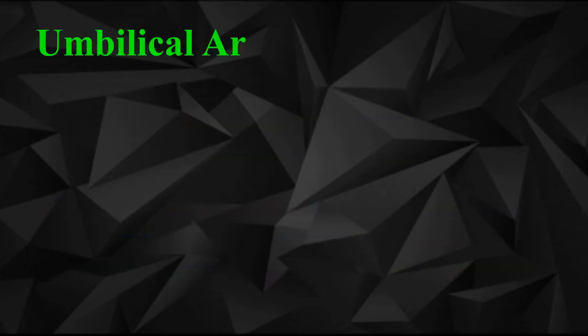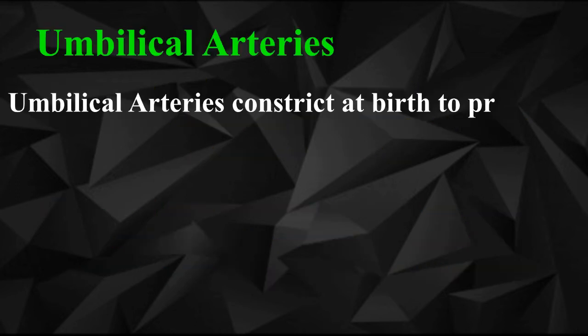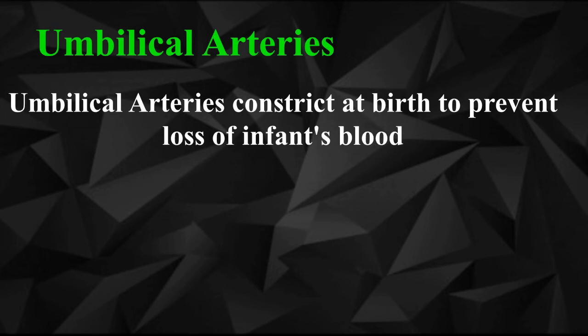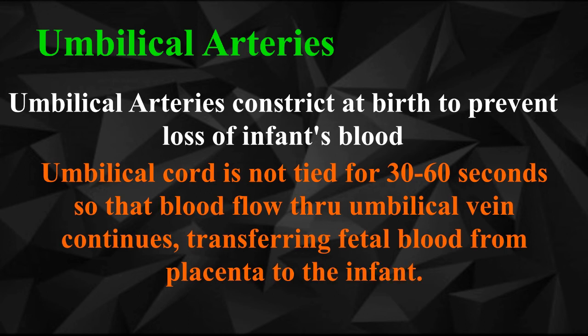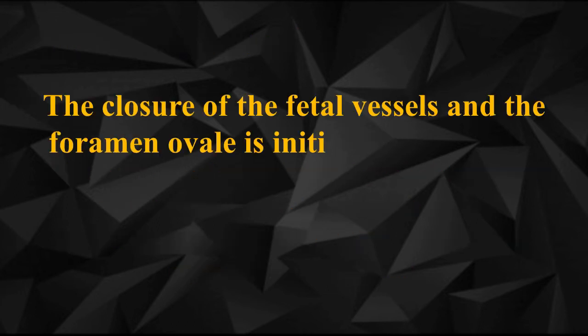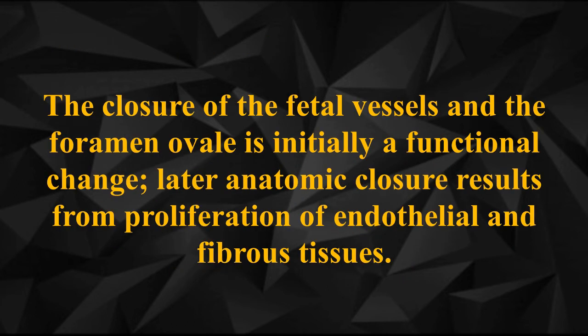6. Umbilical arteries: Umbilical arteries constrict at birth to prevent loss of the infant's blood. The umbilical cord is not tied for 30-60 seconds so that blood flow through the umbilical vein continues, transferring fetal blood from the placenta to the infant. The closure of the fetal vessels and the foramen ovale is initially a functional change; later, anatomic closure results from proliferation of endothelial and fibrous tissues.